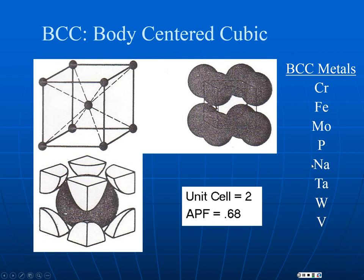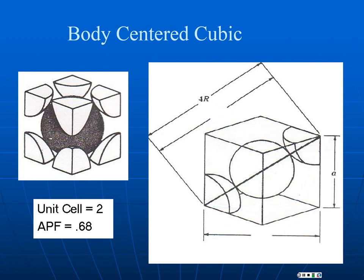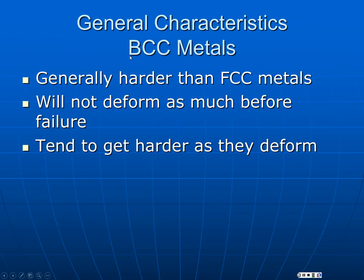BCC materials don't all have high melting temperatures — sodium doesn't melt at a very high temperature. This isn't fundamentally a question of bond strength; it's a question of the arrangement of atoms. BCC materials are hard. For the geometry calculation, you now have to do Pythagoras in three dimensions because we have a diagonal through the center of the cube. You have four radii along the body diagonal, so a² + a² + a² = (4r)², giving a slightly different relationship between radii and side lengths. BCC metals are generally harder and stronger than FCC, less ductile, and they harden rapidly as they deform — they are not as malleable.